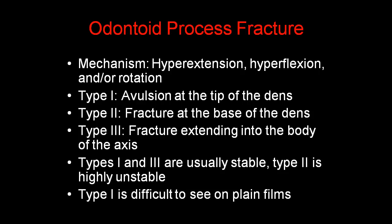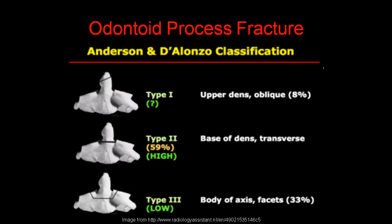Odontoid process fractures occur because of hyperextension, hyperflexion, and/or rotation. Type 1 is an avulsion at the tip of the dens. Type 2 is a fracture at the base of the dens. Type 3 is a fracture extending into the body of the axis — the C2 vertebra. Types 1 and 3 are usually stable, but type 2 is highly unstable. Type 1 is also quite difficult to see on plain films because it's just an avulsion of the very tip.